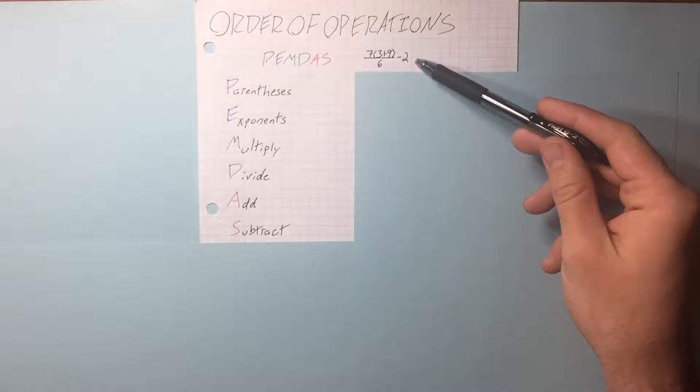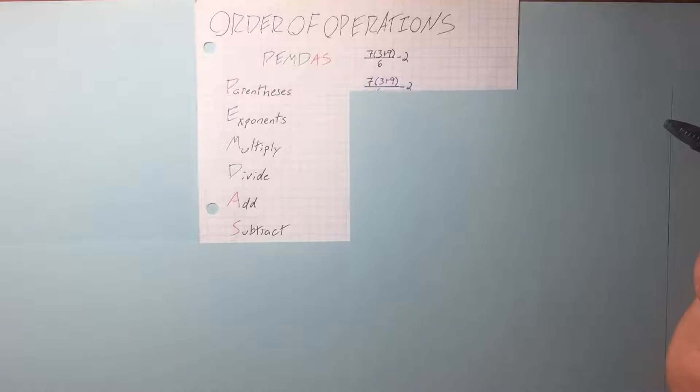Example: What order do you do this stuff in first? We do what's inside the parentheses, which is 3 plus 9. There are no exponents, skip it. We do our multiplication, division, and our answer is 12.